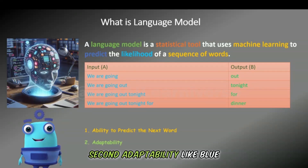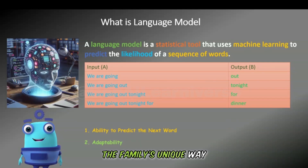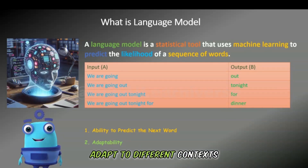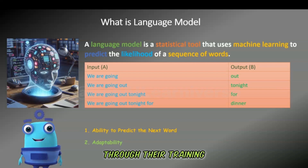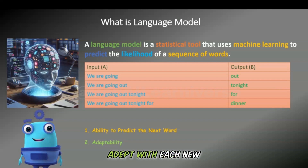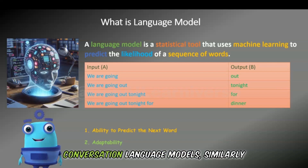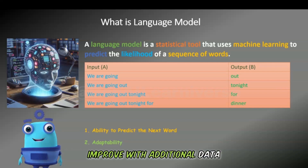Second, adaptability. Like Blue, who learns to understand the family's unique way of speaking, LLMs can adapt to different contexts and nuances of language through their training. As Blue becomes more adept with each new conversation, language models similarly improve with additional data and interactions.